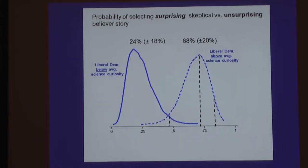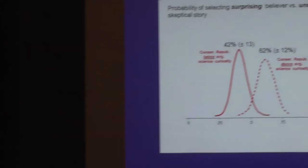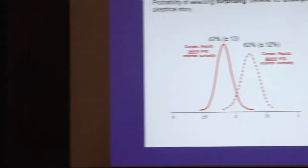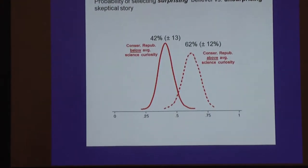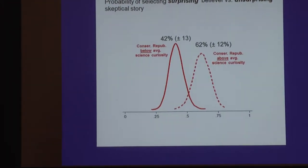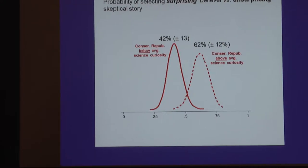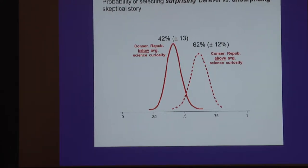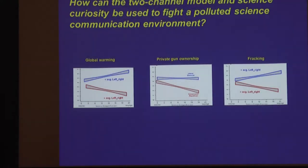The prediction without science curiosity is that people would pick the story most consistent with their ideology regardless of whether it presents new evidence. Our prediction is that science-curious people would want to see new evidence. And indeed: a liberal Democrat below average in science curiosity had only a 24% chance of picking the article contrary to their predispositions. Whereas a liberal Democrat above average in science curiosity had a 68% likelihood of picking the surprising skeptical story over the unsurprising believer story. The same pattern holds for conservatives.